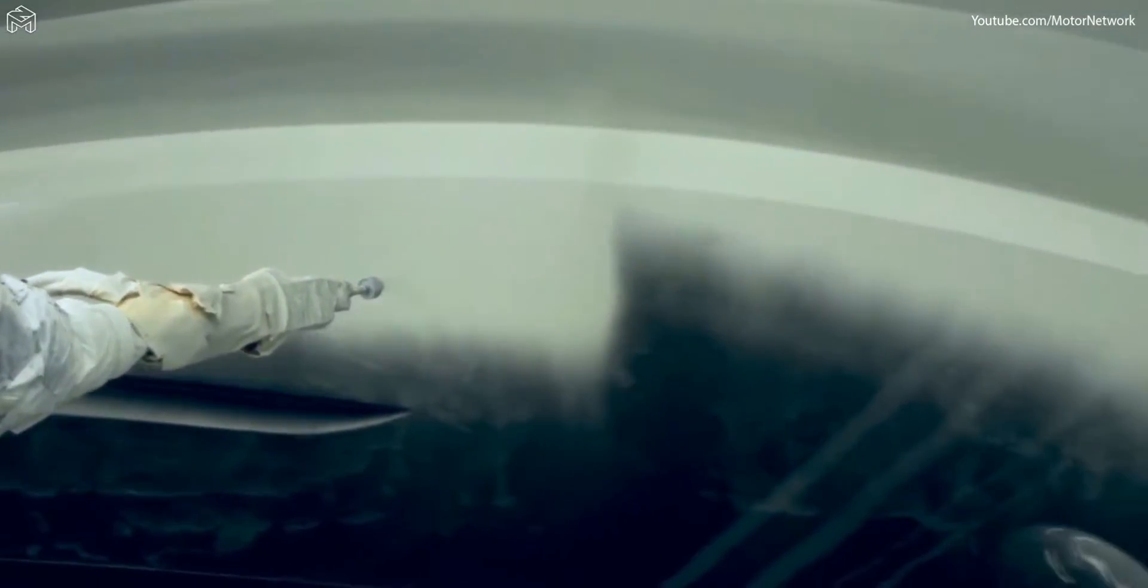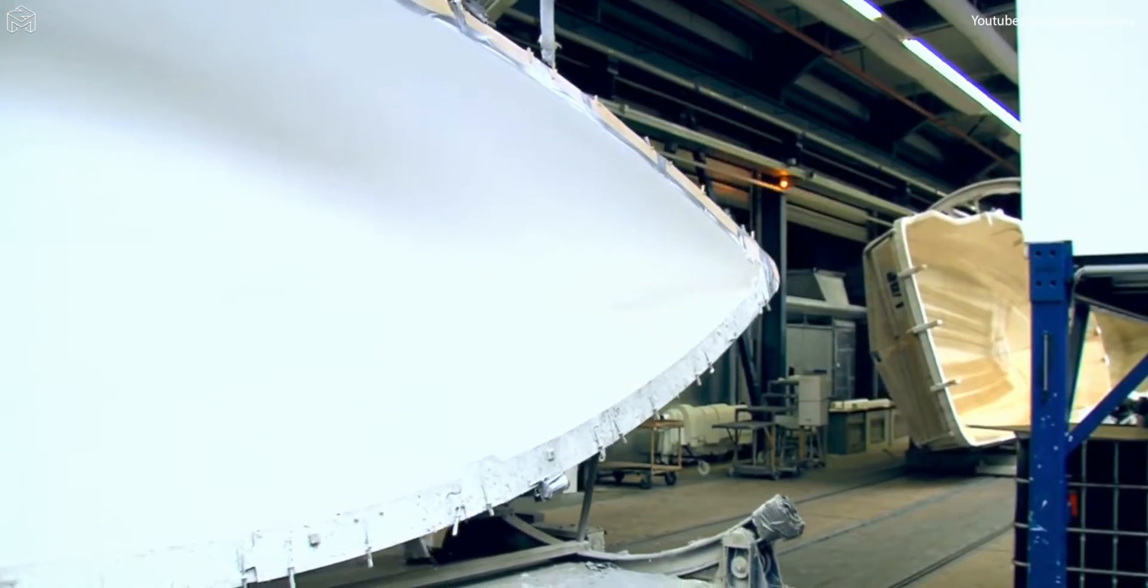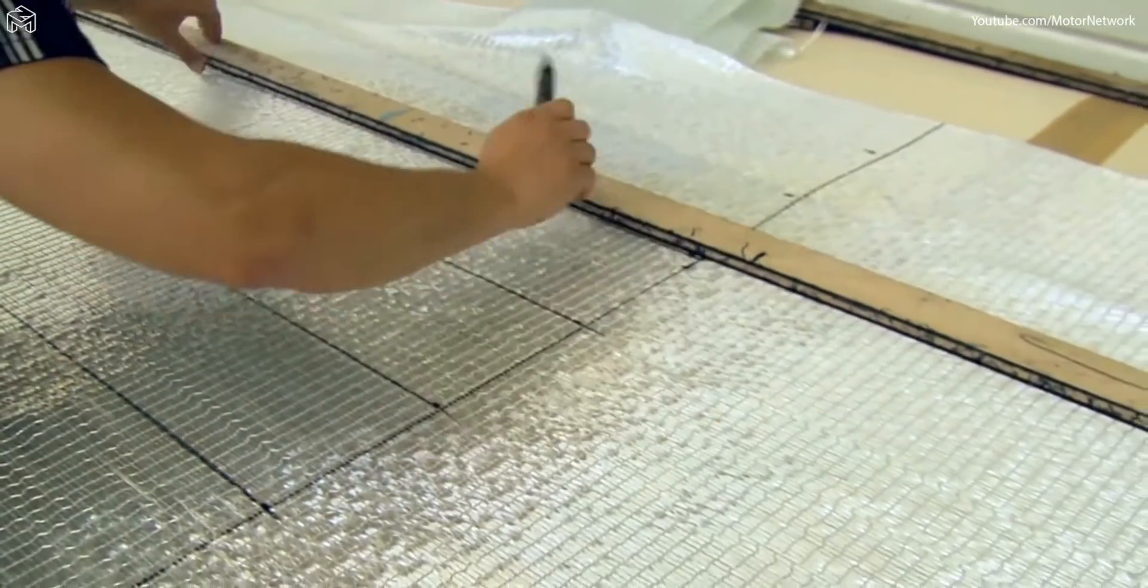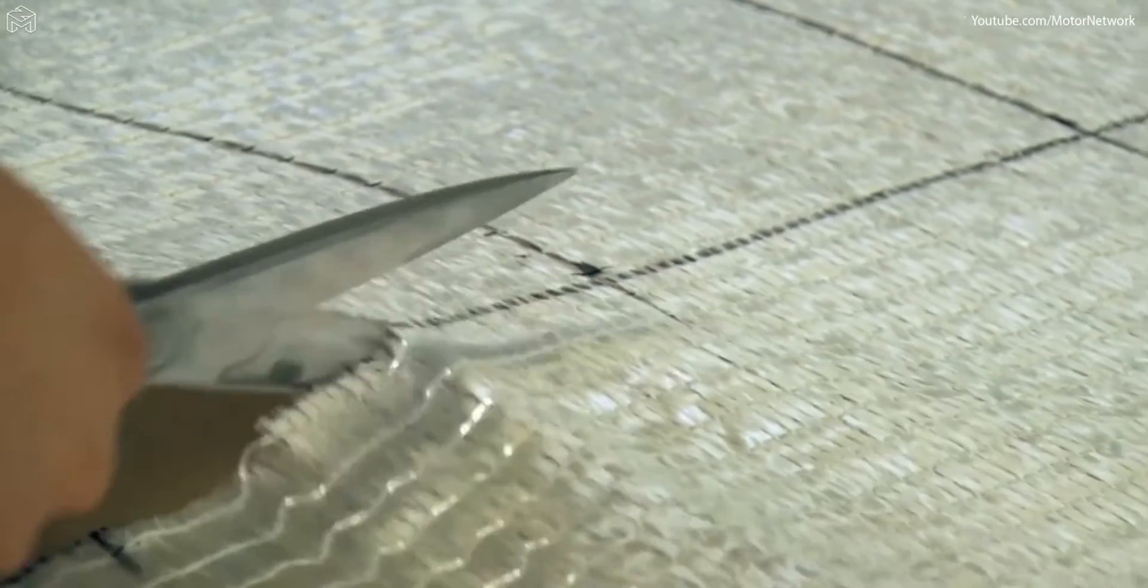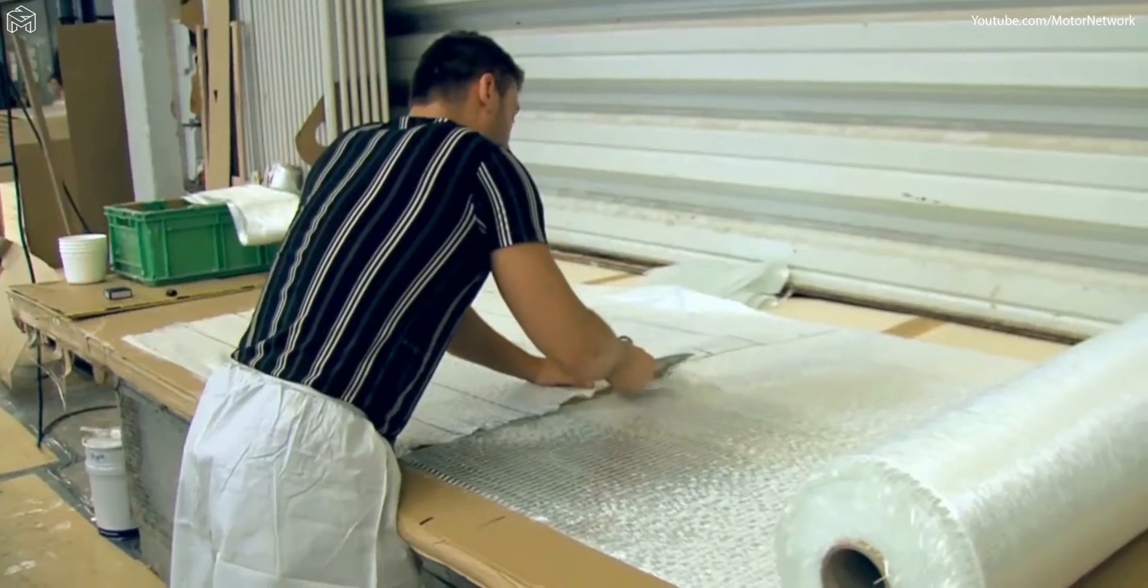Once the mold has left the spray room, the laminating of the hull can begin. Fiberglass mats that are typically used in the production of textiles are now cut individually into exact patterns to match the model they are intended for.